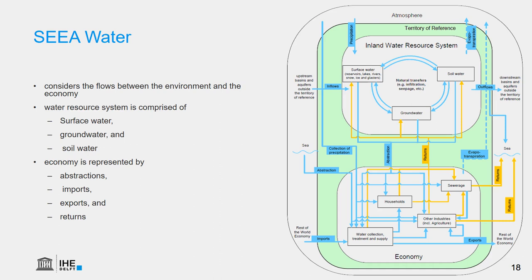The SEEA-Water framework considers the flows between the environment and the economy. The inland water resources system is comprised of surface water, groundwater, and soil water. In relation to the economy, it is represented by abstractions, imports, exports, and returns of the most relevant economic agents, such as households; the industry involved in the collection, treatment, and discharge of sewage; the industry involved in the collection, treatment, and supply of water to households and other industries; other industries which use water in the production process; and the rest of the world. The SEEA-Water has been designed to link economic information with hydrologic information in order to provide users with a tool for integrated analysis, involving collection of very detailed data from various sources. For more information, you are referred to read the SEEA-Water documentation.